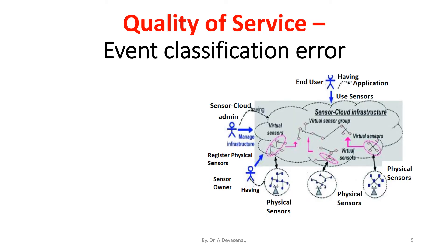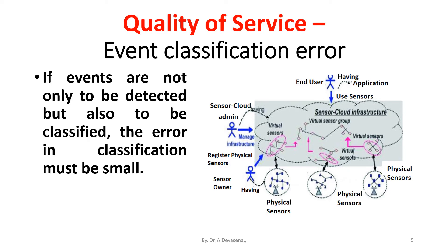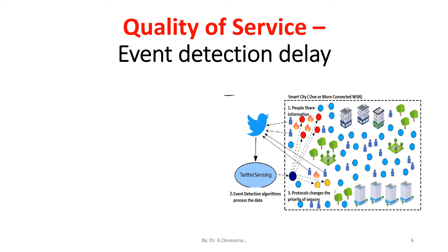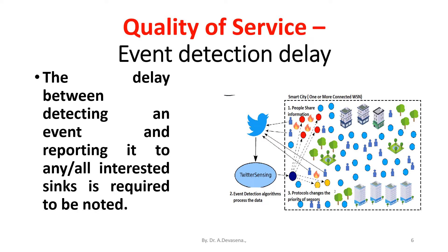Event classification error. If events are not only to be detected but also to be classified, the error in classification must be small. The delay between detecting an event and reporting it to any interested sinks is required to be noted.